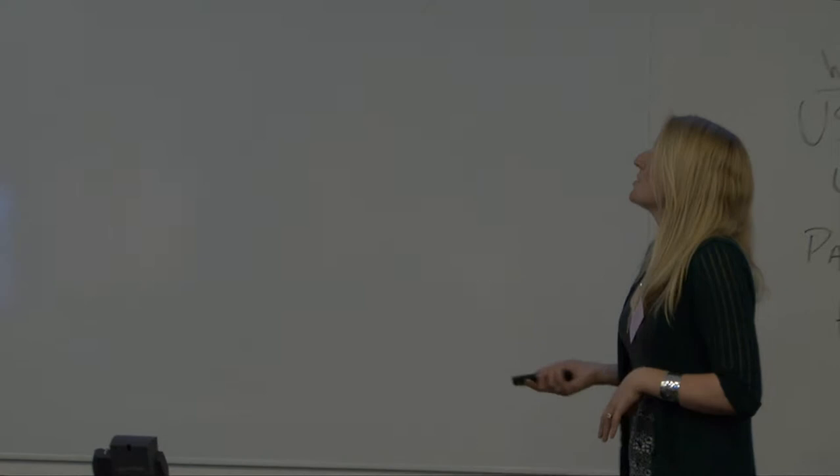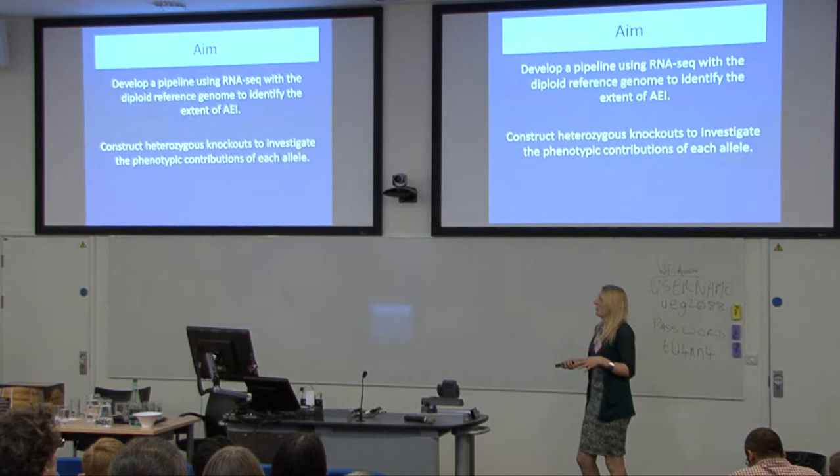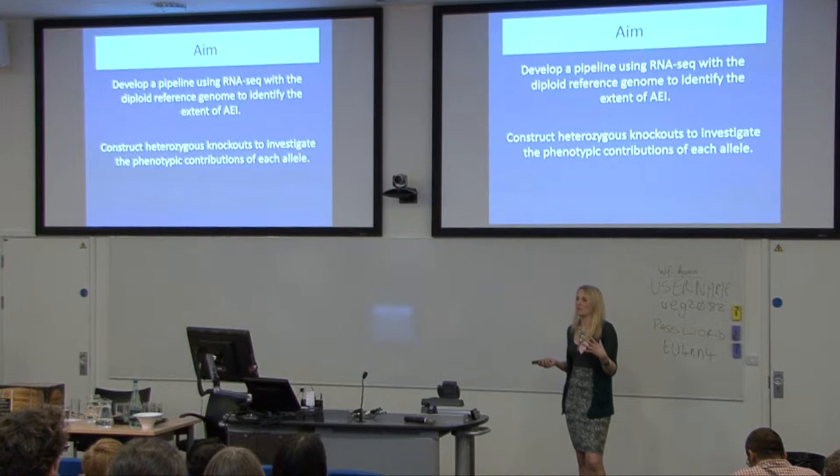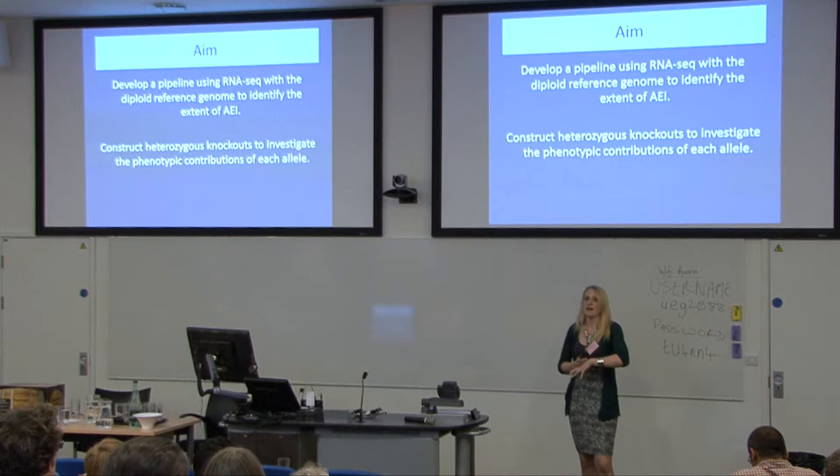The aim of my PhD was to identify the global extent of AEI. I wanted to use RNA sequencing data to do this, in combination with a diploid-referenced genome. This differs from previous studies of AEI, which normally use a haploid-referenced genome, which has been associated with different biases. I wanted to use the diploid-referenced genome to get away from that, and then use heterozygous knockouts to phenotypically work out the contribution of each allele.